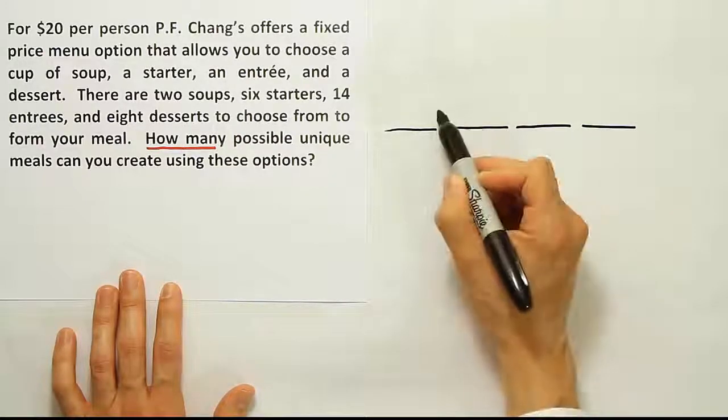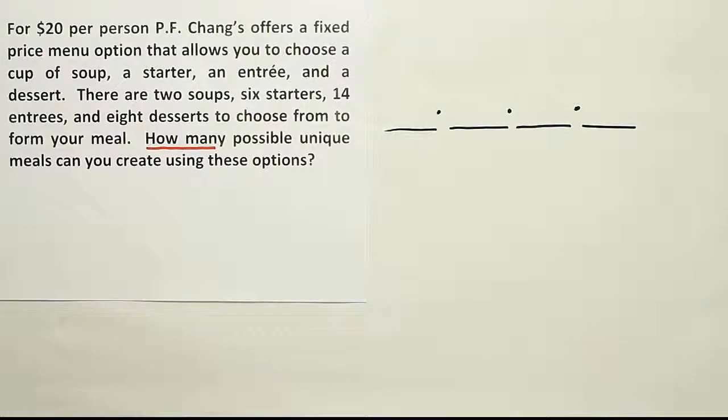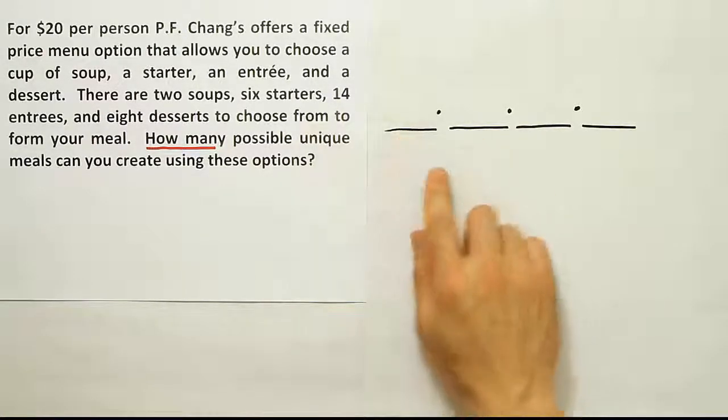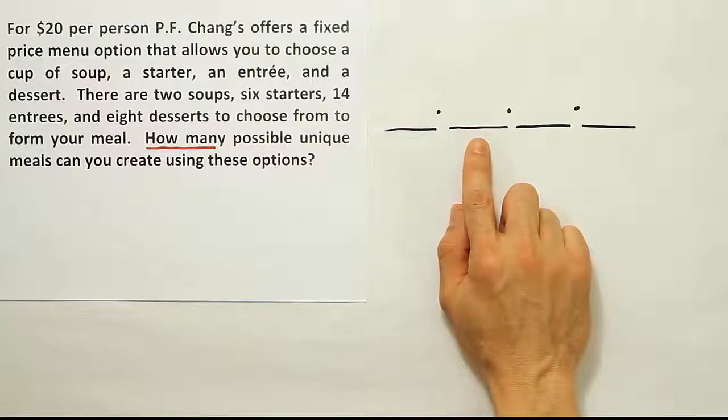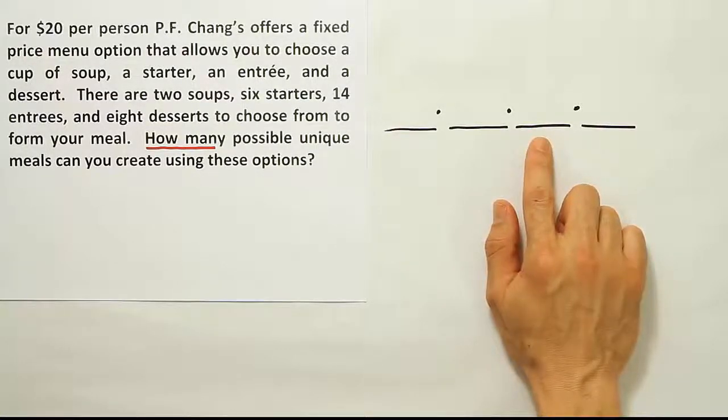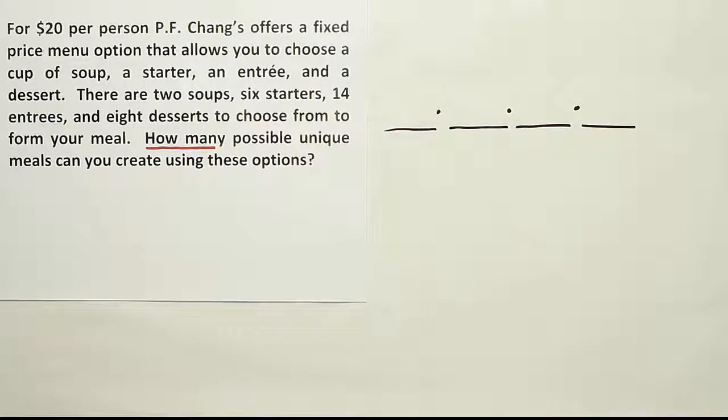And between those spaces, I'm going to put multiplication because the fundamental counting rule says that essentially you have to multiply the number of options to complete the first decision, the number of options you have for the second decision, the number of options you have for the third decision, times the number of options you have for the fourth decision. You multiply them all together and that gives you your solution.